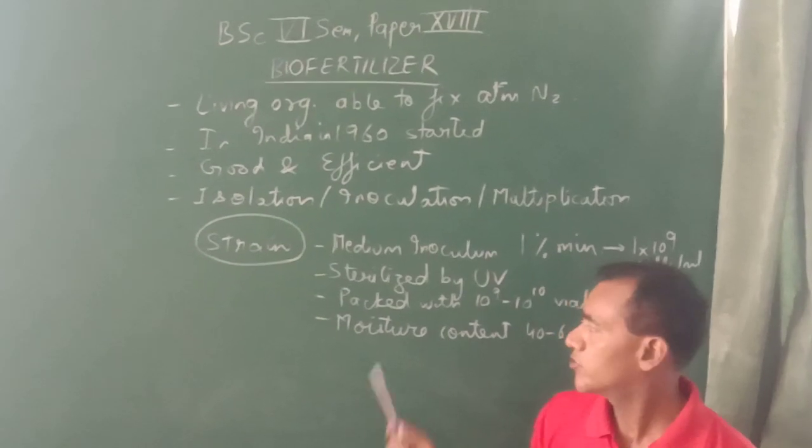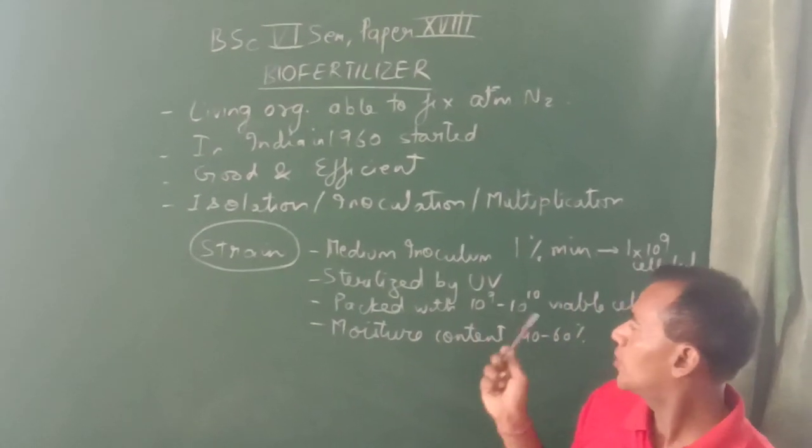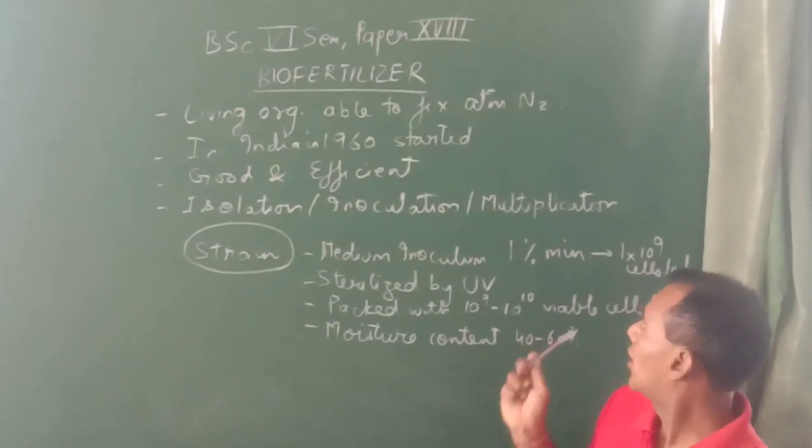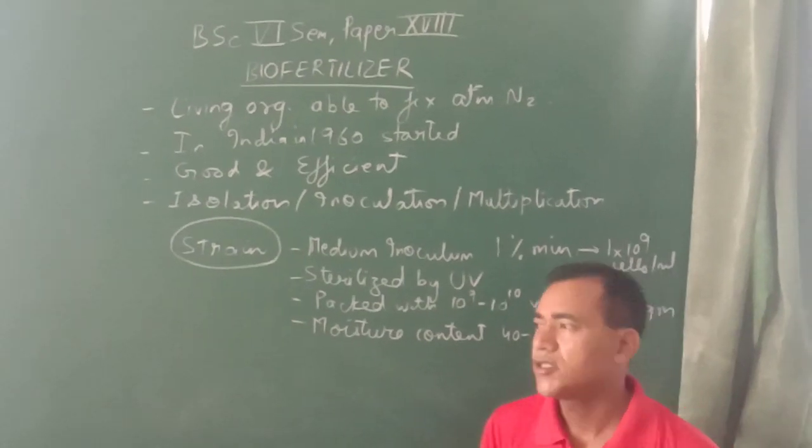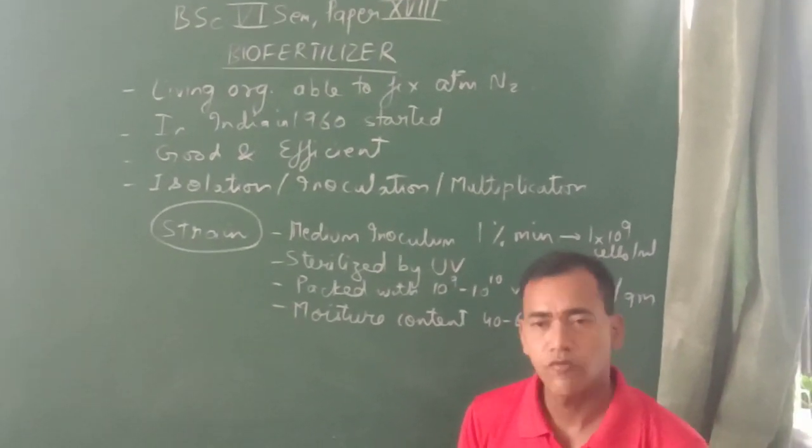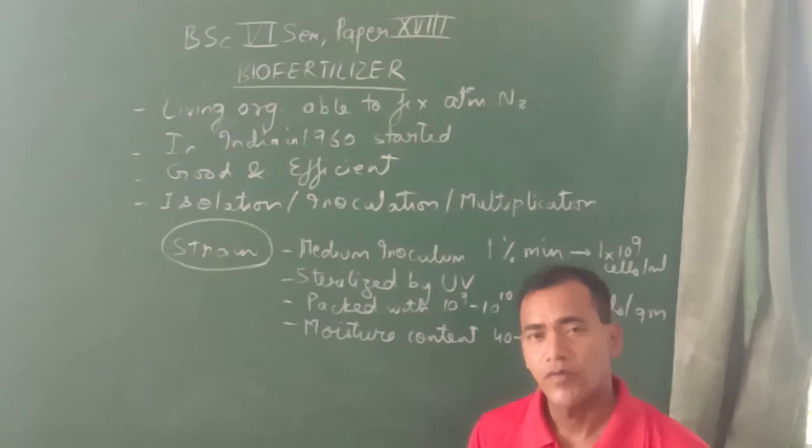These are sterilized by ultraviolet rays, packed with 10^9 to 10^10 viable cells per gram, and the moisture content is capped at around 40 to 60%.